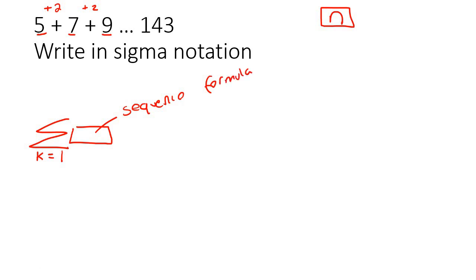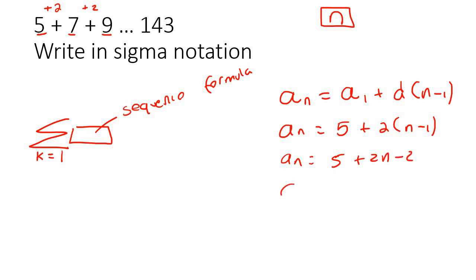It doesn't really matter where we start, but let's start with the sequence formula. We know this is arithmetic, and we're going to use the sequence formula, not the series. So a_n equals a_1 plus d times n minus 1. You're just going to fill in as much as you can. Term 1 is 5, the difference is 2. Then simplify: 5 plus 2n minus 2 becomes 3 plus 2n.